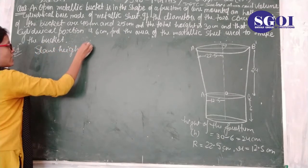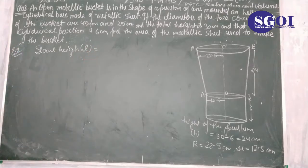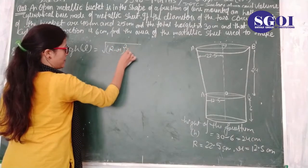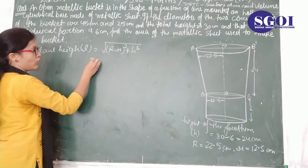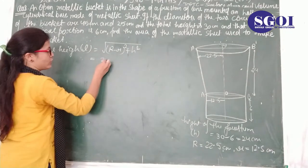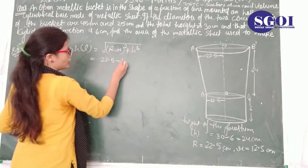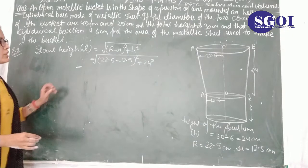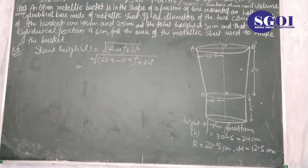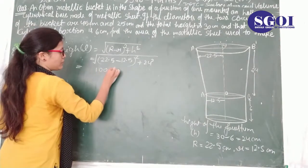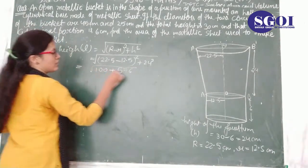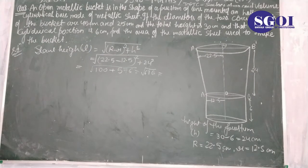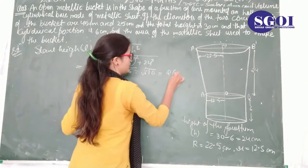Firstly find the slant height of the frustum. Slant height L = √((R - r)² + h²) = √((22.5 - 12.5)² + 24²) = √(10² + 24²) = √(100 + 576) = √676 = 26 cm.